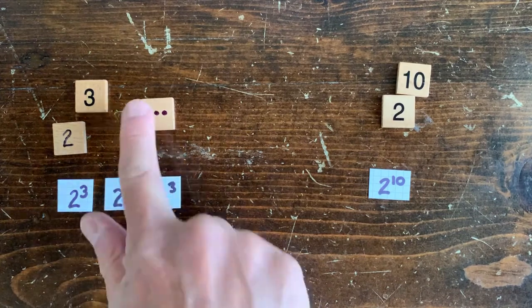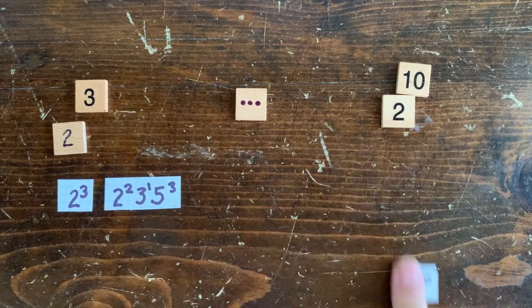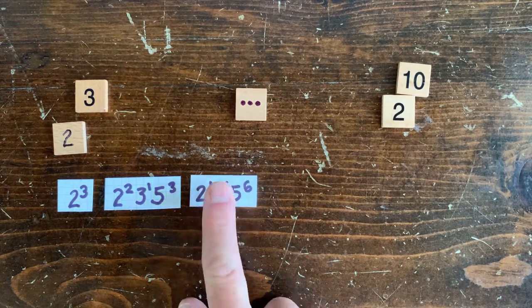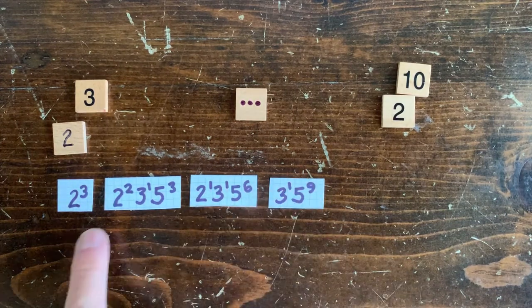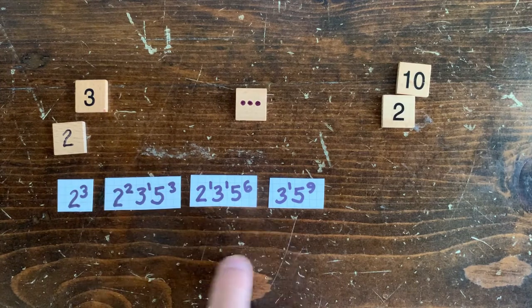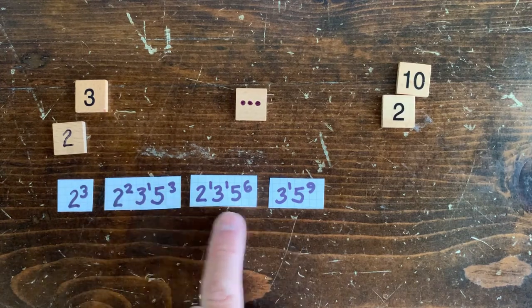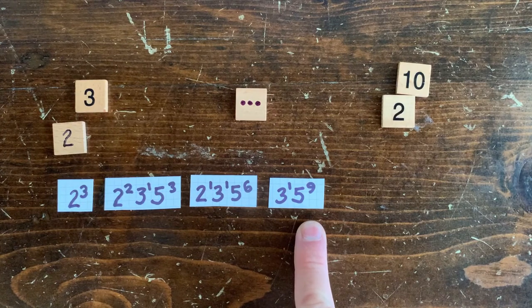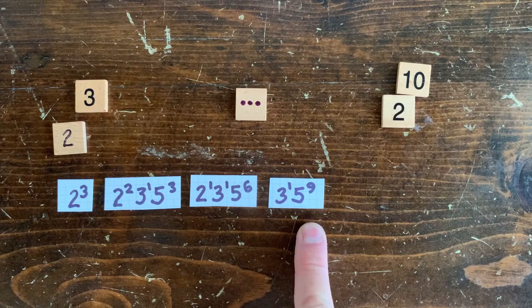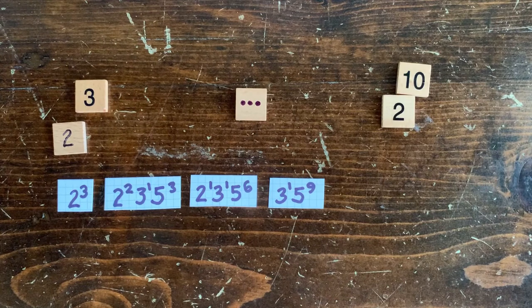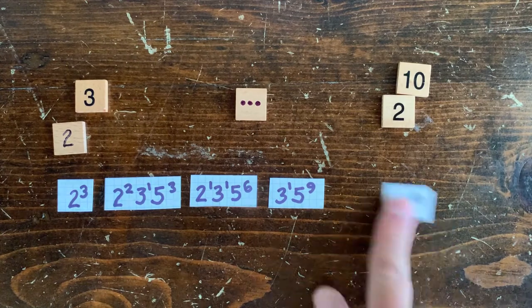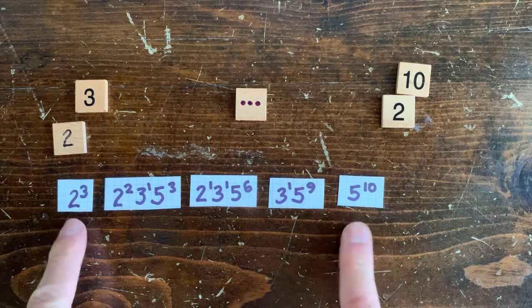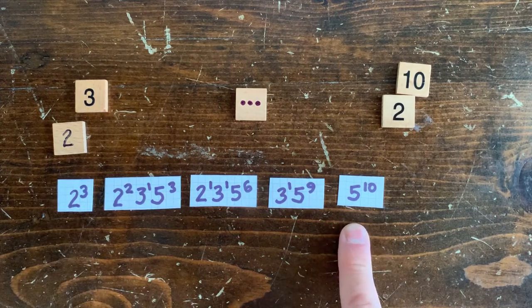So, first we're going to replace 2 to the 3rd with 2 squared times 3 times 5 cubed. So what we're doing is we're going to keep decrementing the exponent of the 2, while simultaneously adding 3 to the exponent of the 5 each time. And in a couple of steps, we'll have 3 times 5 to the 9th. So, see the 9? We just multiplied our input by 3. And now, for the next step, we drop the 3 and increment the 5's exponent by 1. And, voila, we have our answer 10.